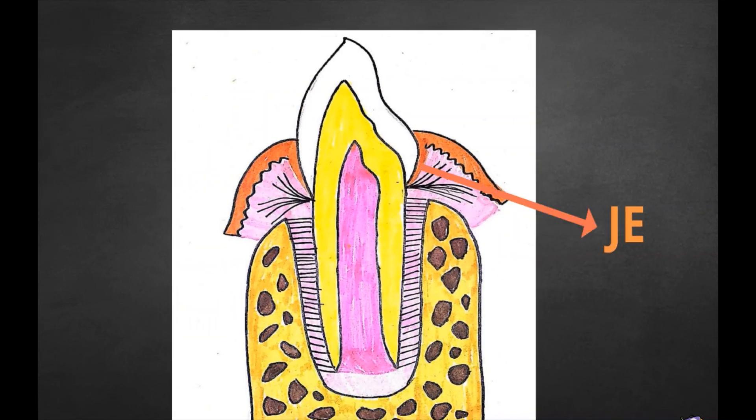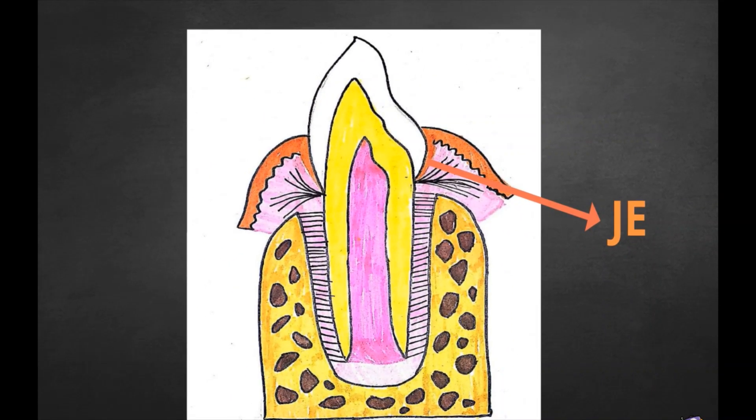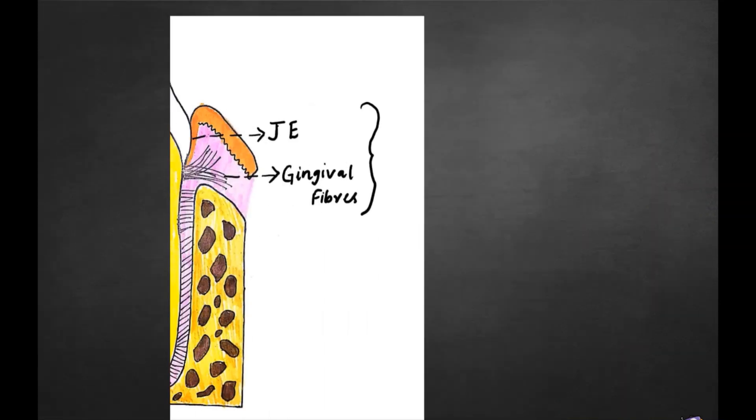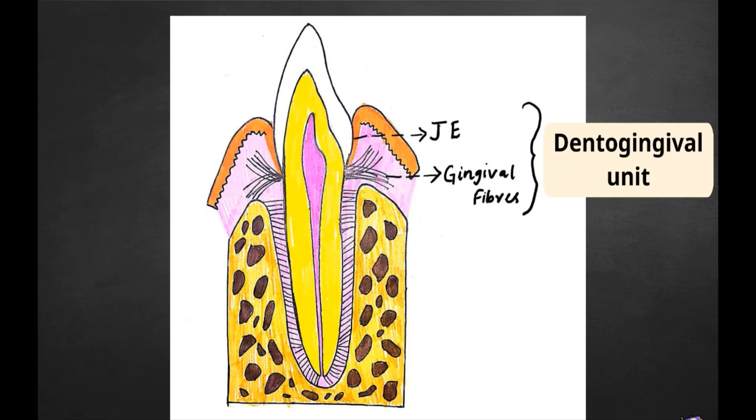During the later phase of eruption, all cells of reduced enamel epithelium fuse with oral epithelium and form junctional epithelium. Once fully erupted, the dento-gingival unit is formed by junctional epithelium and gingival fibers.